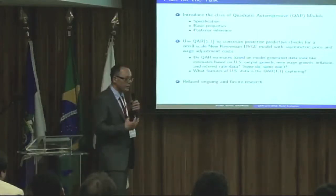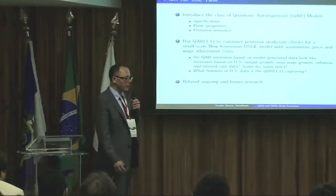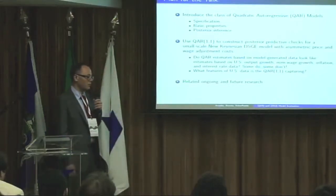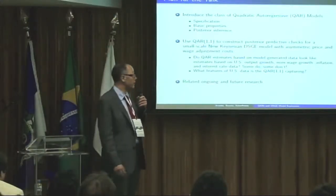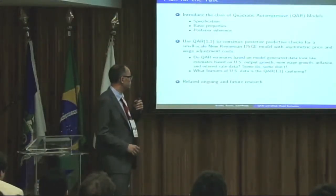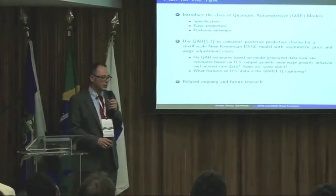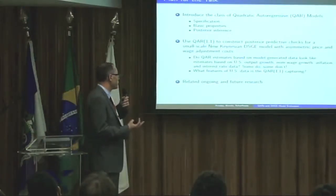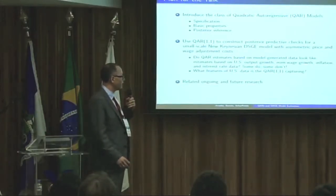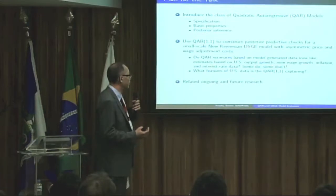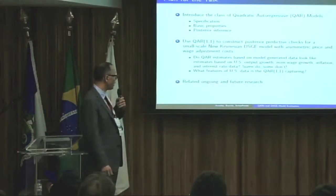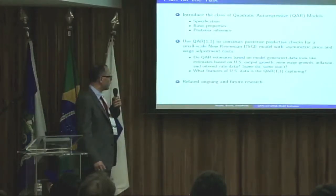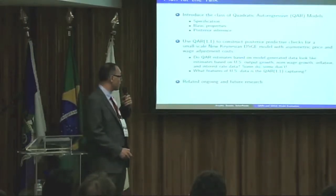The question these predictive checks ask is: suppose you estimate these quadratic autoregressive models based on model-generated data and look at the estimates — do they look like estimates you would get if you were to use U.S. data? There's a way of formalizing this basic idea, and we formalize it using posterior predictive checks. In the end, I'll give some summary and outlook.